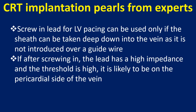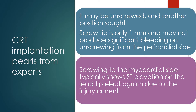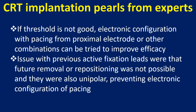CRT implantation pearls from experts: a screw-in lead for LV pacing can be used only if the sheath can be taken deep down into the vein, as it is not introduced over a guide wire. If after screwing in, the lead has high impedance and high threshold, it is likely on the pericardial side of the vein — it may be unscrewed and another position sought. The screw tip is only 1 mm and may not produce significant bleeding on unscrewing from the pericardial side. Screwing to the myocardial side typically shows ST elevation on the lead tip electrogram due to injury current. If threshold is not good, electronic configuration with pacing from the proximal electrode or other combinations can be tried to improve efficacy.